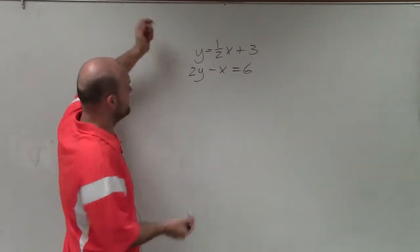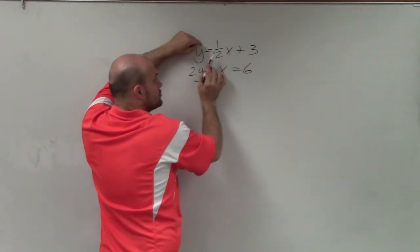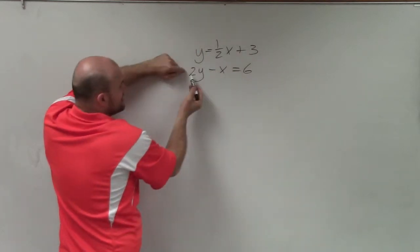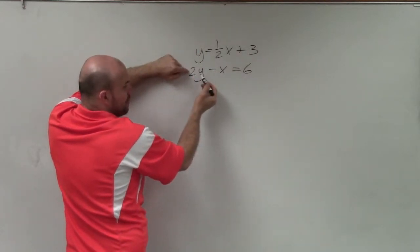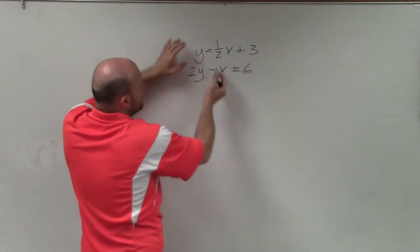So if I look at this equation here, this says y, the value of my variable y, is equal to 1 half of the value of x plus 3. Here it says 2 times the value of my variable y minus my value of my variable x equals 6.